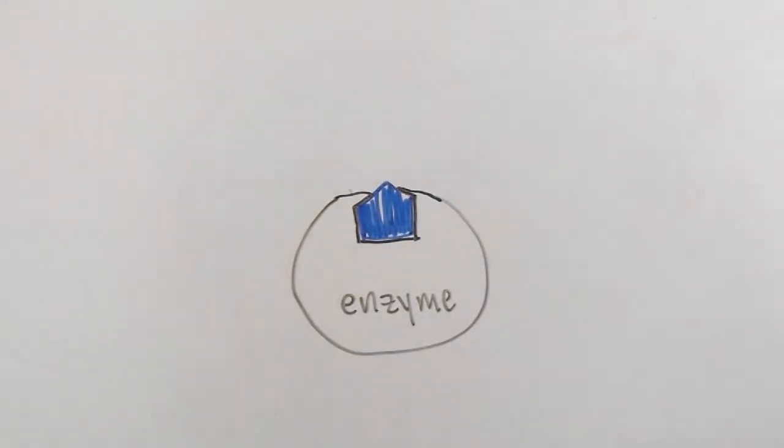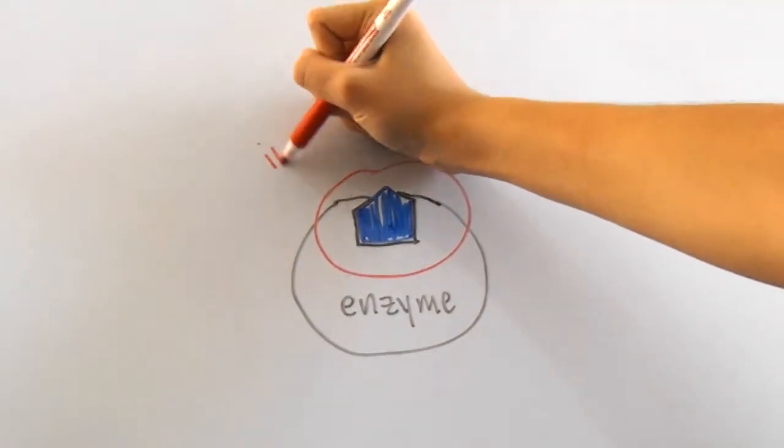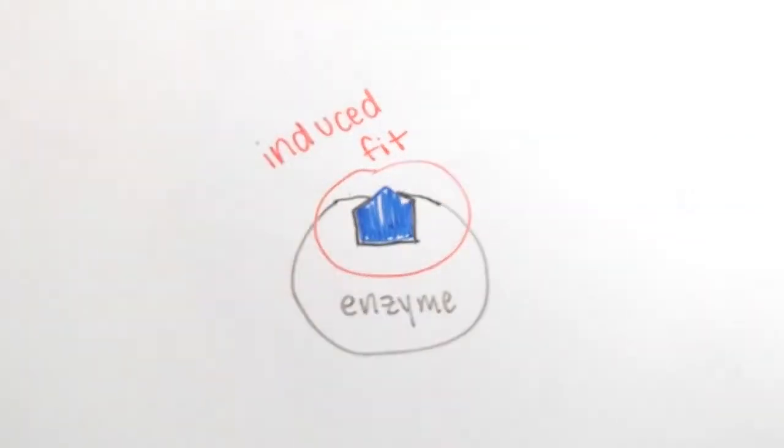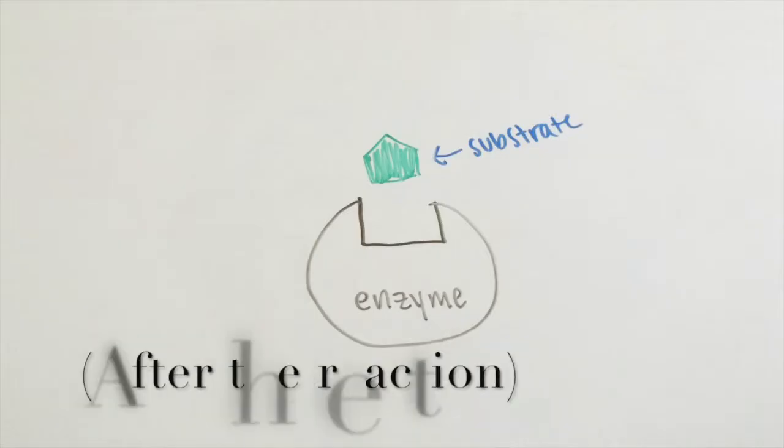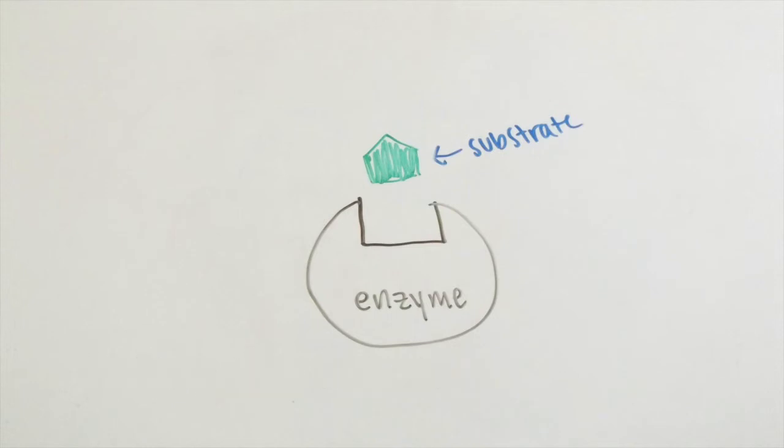When the enzyme does change like this when the substrate attaches to it, this is called the induced fit model. The substrate latches onto the active site and the enzyme closes around it and fits it better. As you can see, when the reaction finishes, the enzyme goes back to its normal shape.